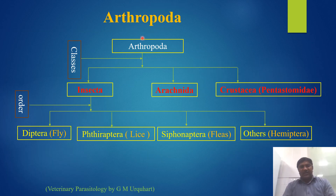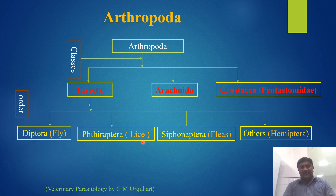Arthropoda has three main classes: Insecta, Arachnida, and Crustacea (or Pentastomida). In the class Insecta, the following orders are included: Diptera, which has the flies; Phthiraptera, which has the lice; Siphonaptera, which has the fleas; and Hemiptera.